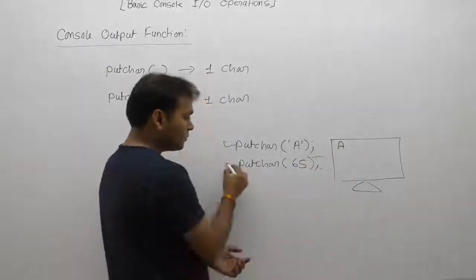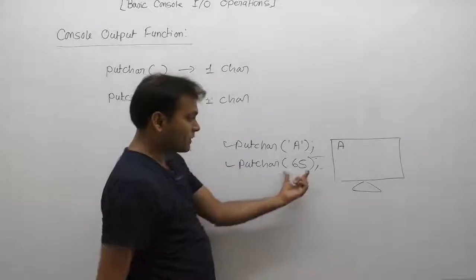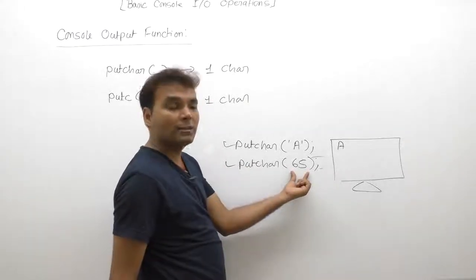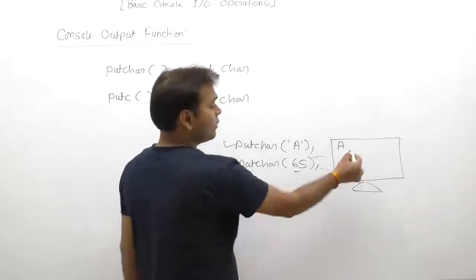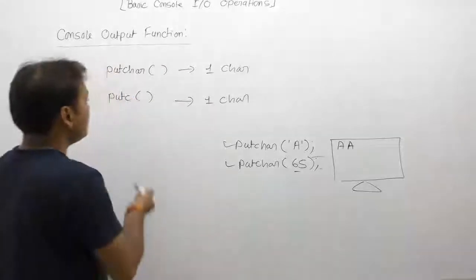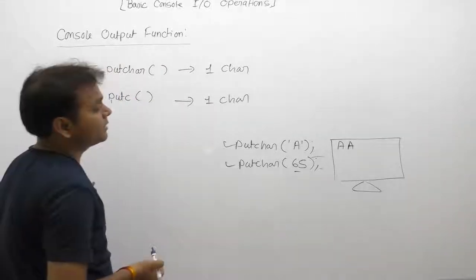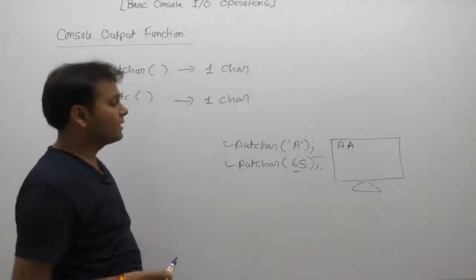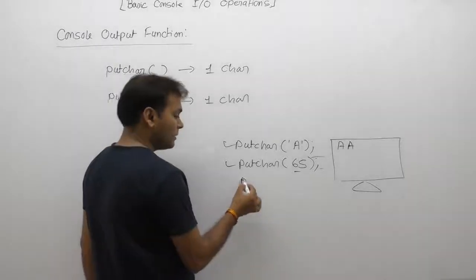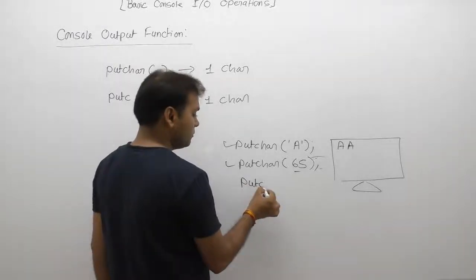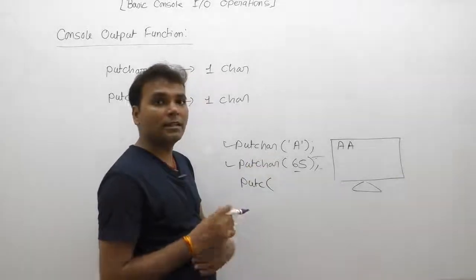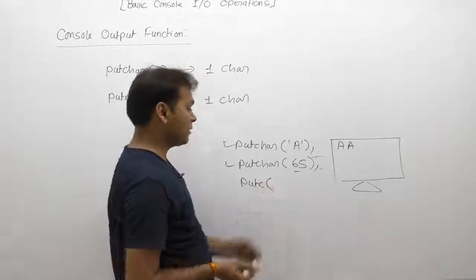The working of the putchar function simply displays a single character on the monitor. For example, in the first case it displays 'A'. In the second case, passing 65 — which is the ASCII equivalent of 'A' — also displays 'A'. Therefore, 'A' is displayed in both cases. putchar and putc can only display a single character.